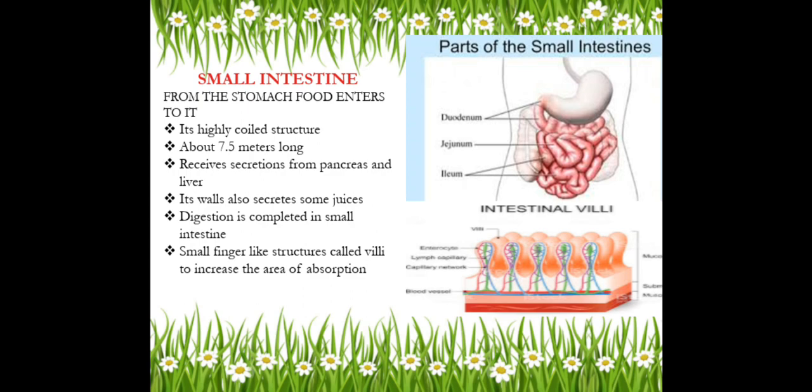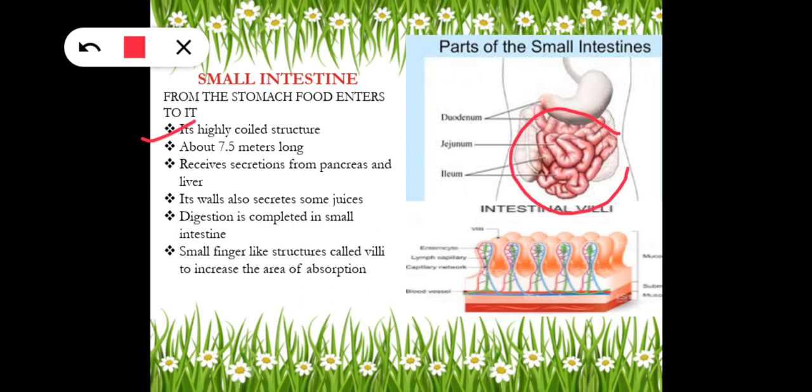Next, we move to the small intestine. After the food is digested in the stomach, it enters the small intestine. The small intestine is a highly coiled structure — a long, narrow, coiled tube that is nearly 7.5 metres long. It is found in the lower abdomen. The small intestine is where the greater part of digestion and absorption takes place.